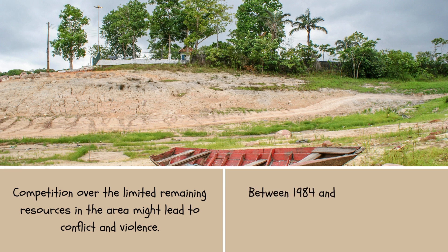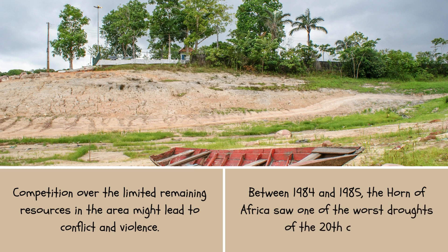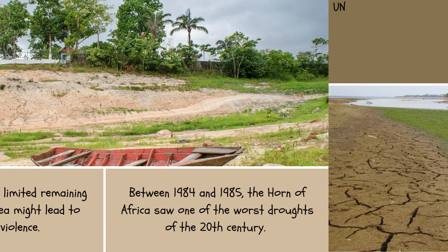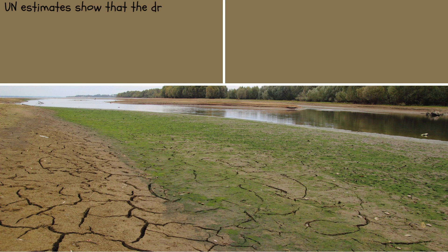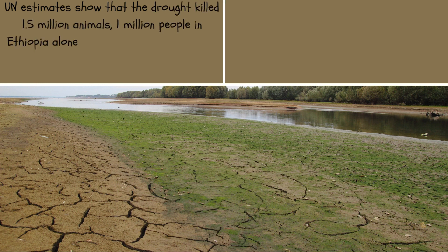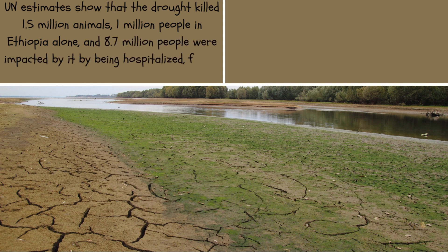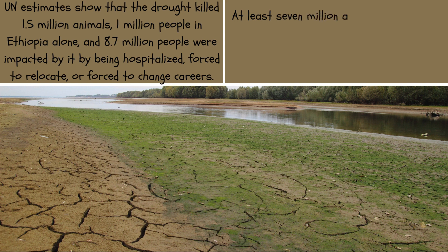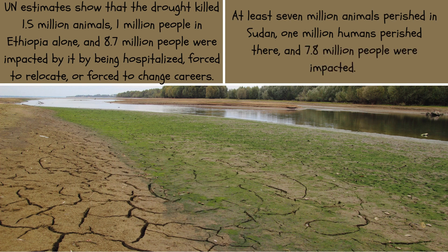Between 1984 and 1985, the Horn of Africa saw one of the worst droughts of the 20th century. UN estimates show that the drought killed 1.5 million animals and 1 million people in Ethiopia alone, with 8.7 million people impacted by being hospitalized, forced to relocate, or forced to change careers. At least 7 million animals perished in Sudan, 1 million humans perished there, and 7.8 million people were impacted.